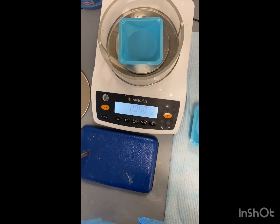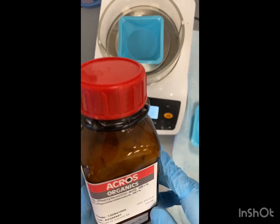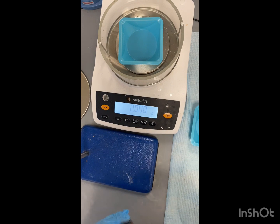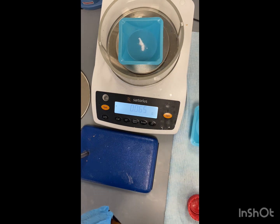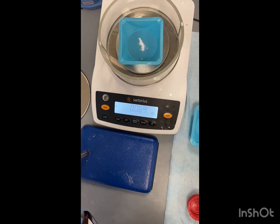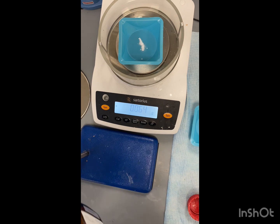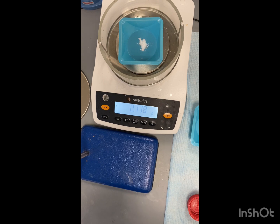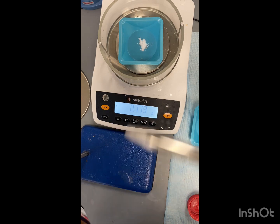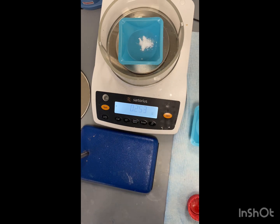Alright, so first we're going to add one gram of racemic phenylsuccinic acid. So here it is. Again, we're going to add about one gram. I already have my weigh boat on the scale and it's already tared.